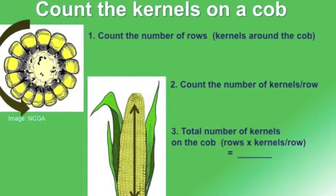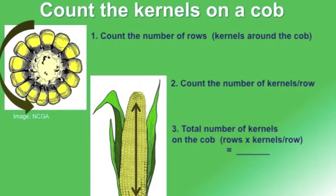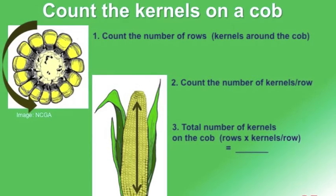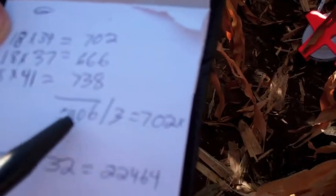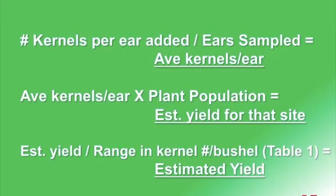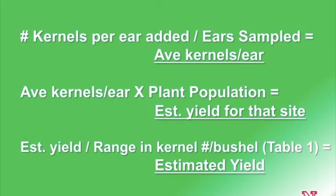We've already done this on some of the ears. Using simple multiplication, we take 18 — how many kernels went around the ear — and multiply by the number of kernels lengthwise. That gives us the kernel count per ear. After doing that with each ear, we total them all up and divide by the number of ears counted to give the average total number of kernels. For this example, we had an average of 702 kernels, giving us our total within that 17 feet 5 inches, or 1/1,000th of an acre.